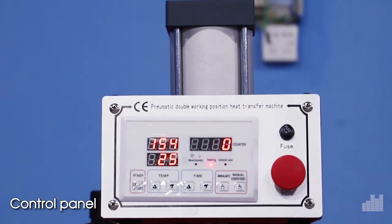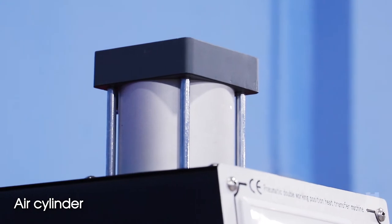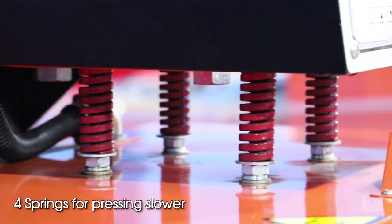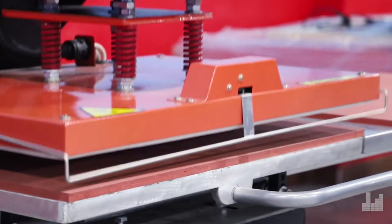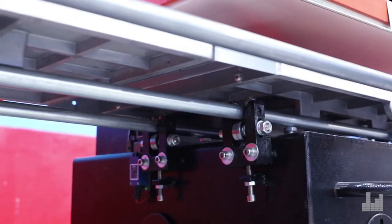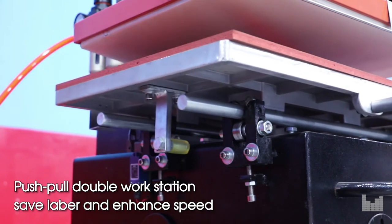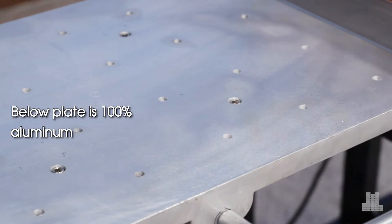The machine features a control panel, air cylinder, 4 springs for placing slower, hand protect device, and push-pull double wall station that saves labor and enhances speed. The below plate is 100% aluminum.